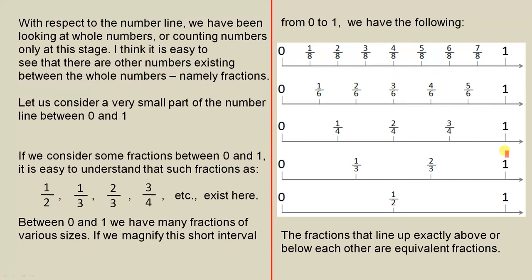Here are some number lines — there are five of them. We can see that, for example, this one has the fraction one half; it is halfway between 0 and 1. Here we have one third and two thirds. A quarter, two on four, three on four. And then we have divided the number line into six parts, and here we have divided it into eight parts, all for the interval from 0 to 1.